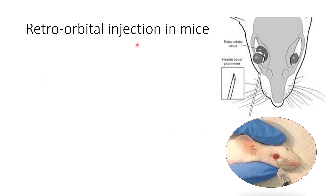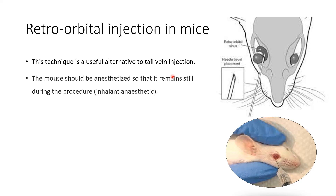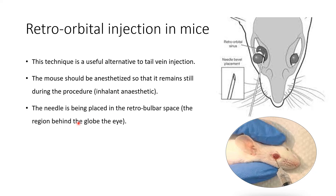The next is the retro-orbital injection in mice, a useful alternative to tail vein injection. The mouse should be anesthetized — mostly with inhalant anesthetic — so that it remains still during the procedure. The needle is placed in the retro-bulbular space, which is the space behind the globe of the eye, as shown in the diagram. This is a very good alternative to tail vein injection.